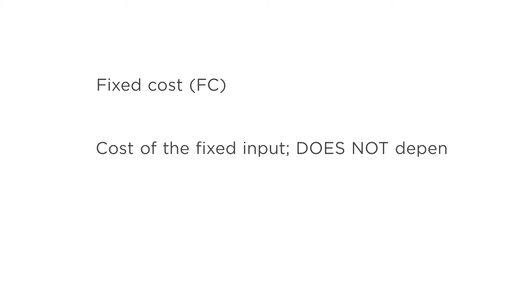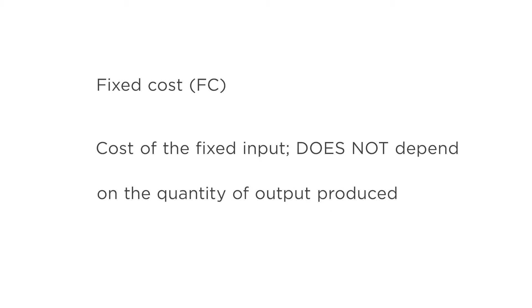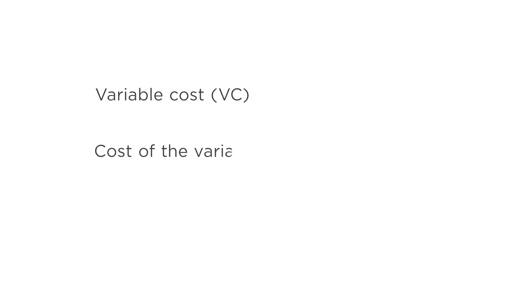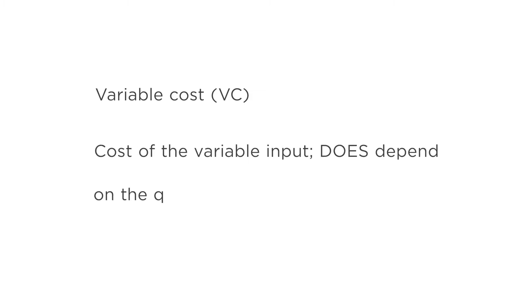For capital, firms have already paid for capital they have in place. In the short run, they can't spend any more or less on capital, so we call this a fixed cost. A fixed cost is the cost of the fixed input and does not depend on the quantity of outputs produced. For labor, firms can adjust what they spend — adding a worker or letting a worker go — so we call this a variable cost. A variable cost is the cost of the variable input and does depend on the quantity of output produced.